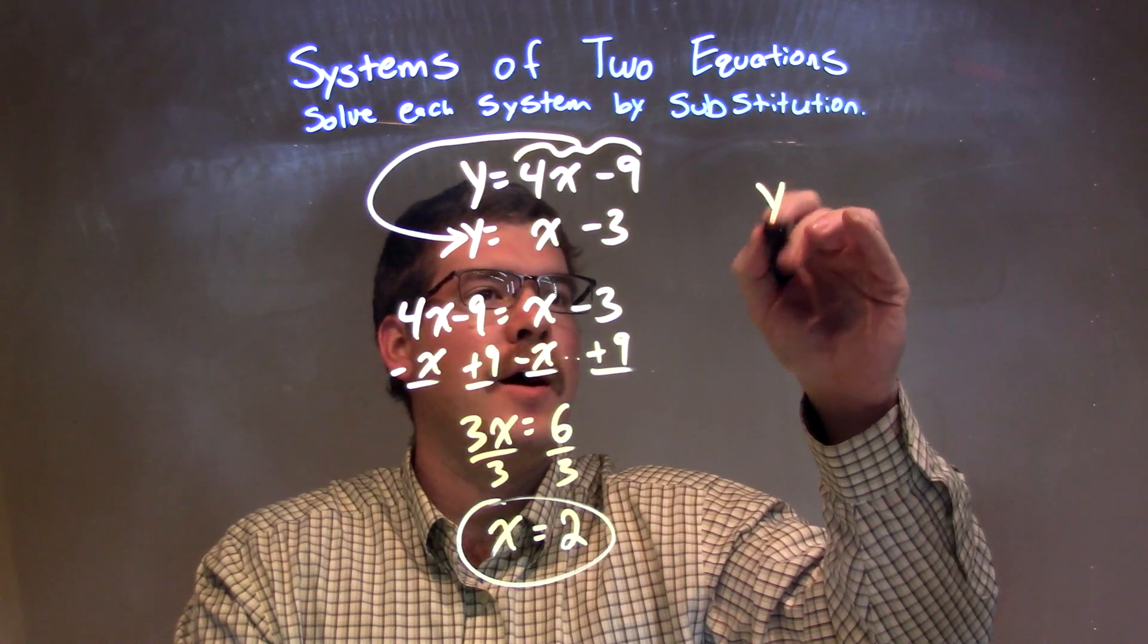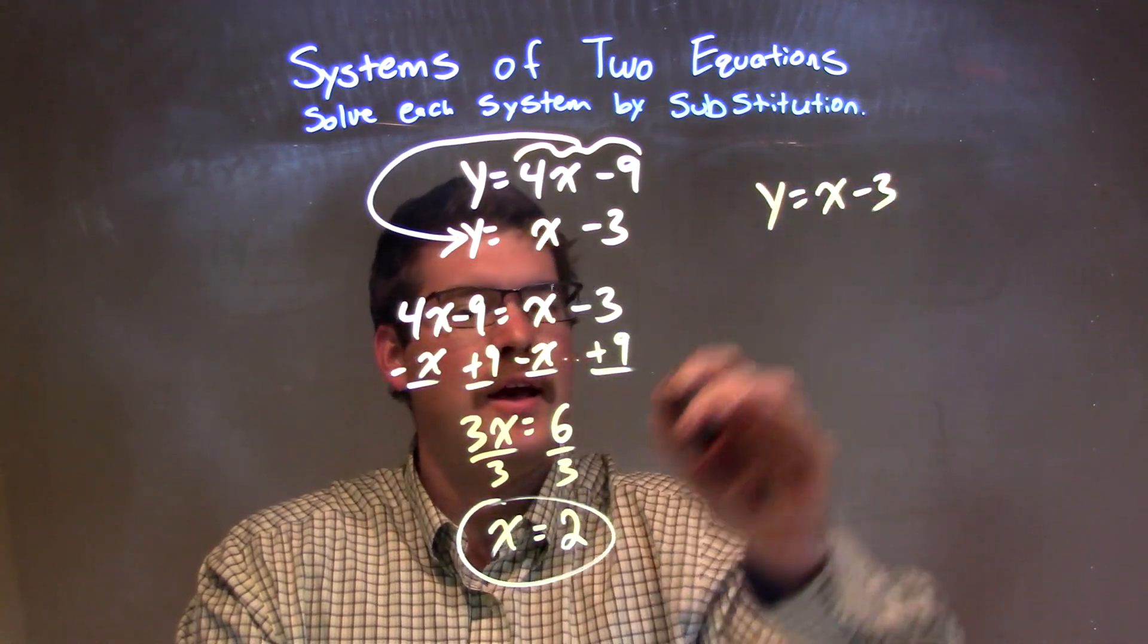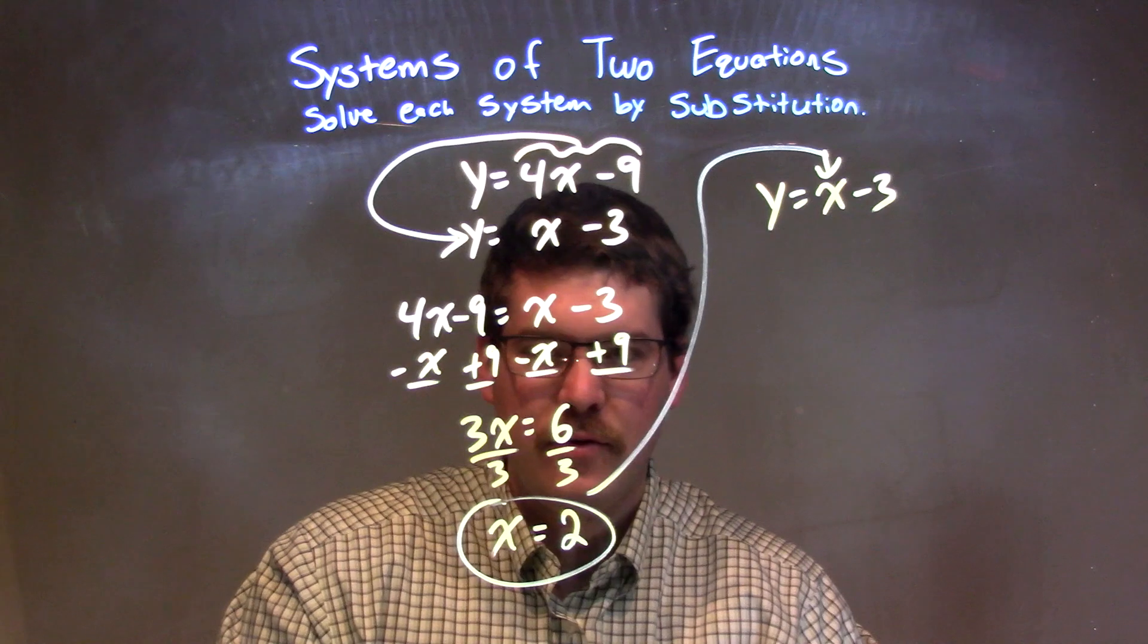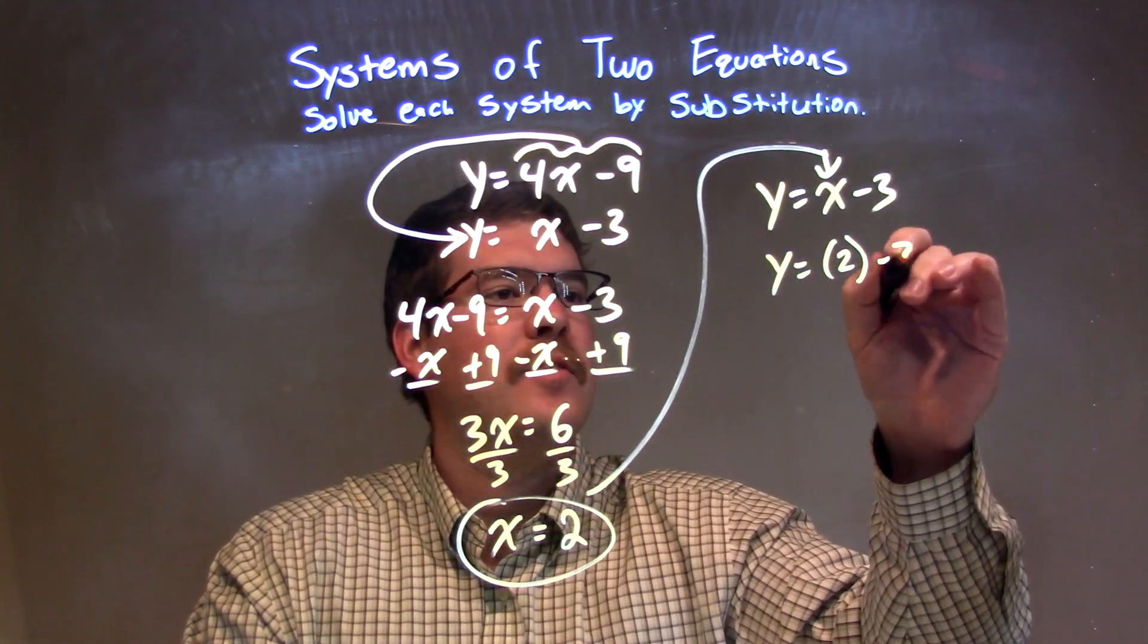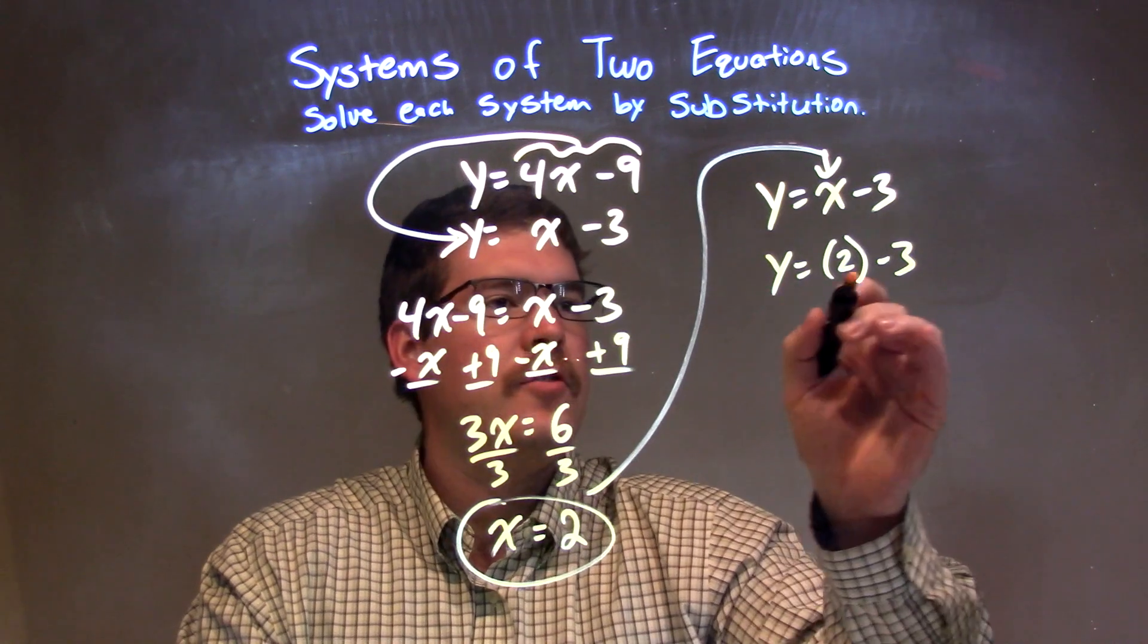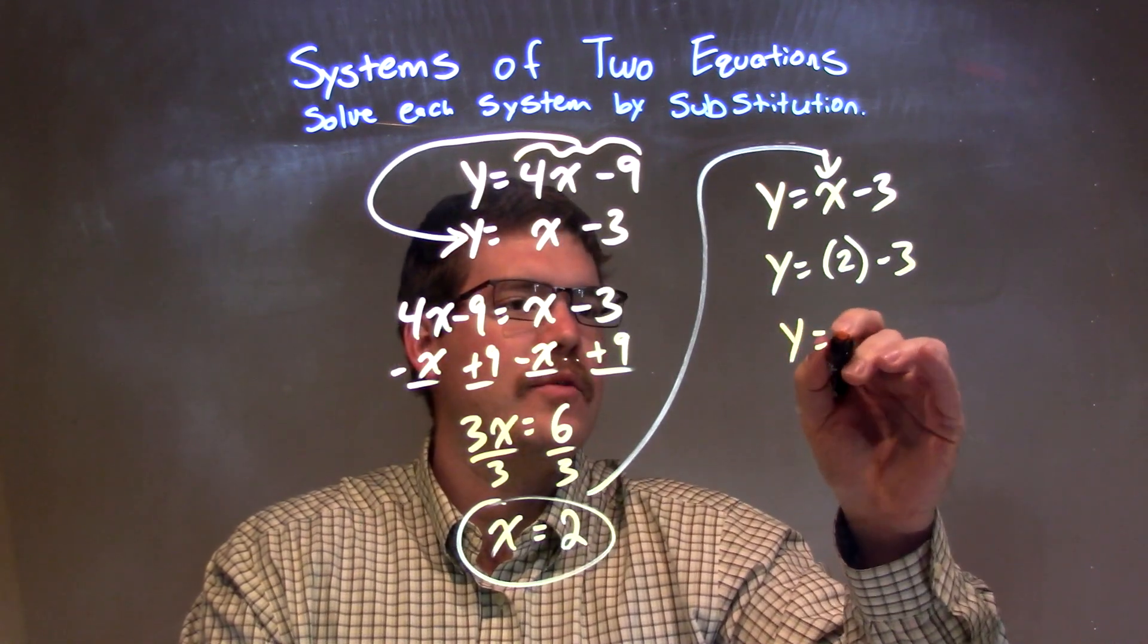So, I have y equals x minus 3, and I'm going to substitute that 2 in for the x. y equals 2 minus 3. 2 minus 3 is negative 1, so y equals negative 1.